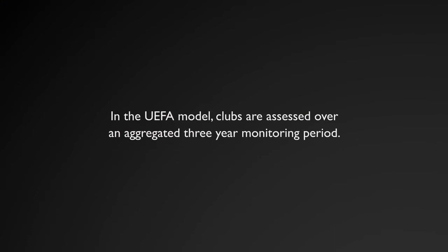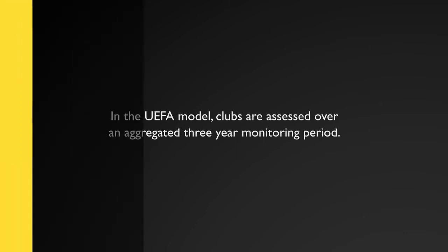An important point is that certain costs are excluded when assessing whether clubs have met the break-even requirements, including money spent on youth development, community development, women's football, and stadium infrastructure and facilities costs. Clubs are assessed over an aggregated three-year monitoring period: the current season (T), the previous season (T-1), and the season before that (T-2). You take the total of all three seasons and work out whether there's been a profit or a loss. For example, if a club makes a profit of £20 million in T but lost £10 million in each of the previous two seasons, overall the club will have met the break-even requirement.